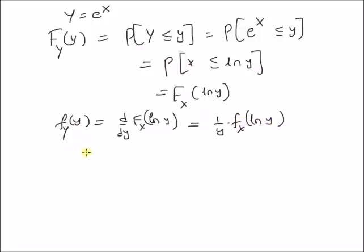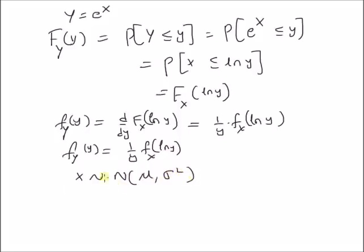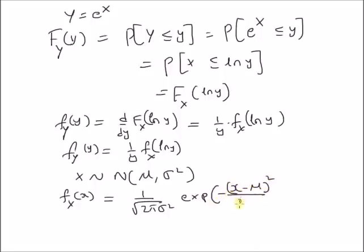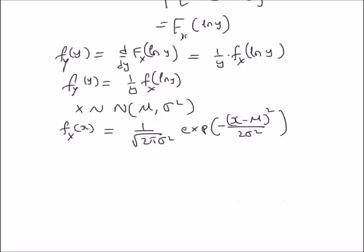So the PDF of the derived random variable y is equal to 1/y times f_x(log y). From this definition, we can derive the log normal distribution by simply assuming that x belongs to a Gaussian distribution with mean mu and variance sigma squared. This means the PDF of x is equal to 1 over square root of 2 pi sigma squared, multiplied with exponential of minus (x minus mu) squared divided by twice the variance. This is the PDF of a Gaussian random variable, where x is a real number.